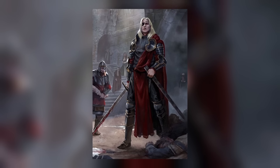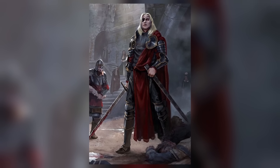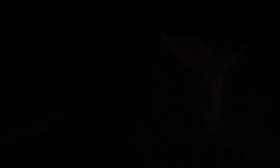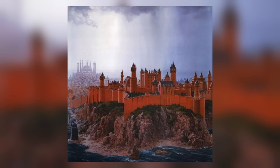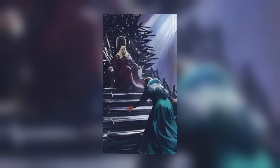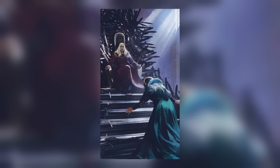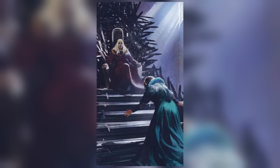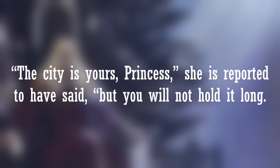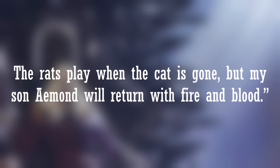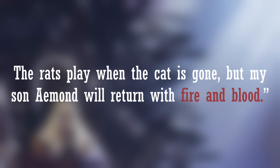However, the show will probably end in the same way that the chapter in the book does — with Aemond and Ser Criston believing that Rhaenyra and Daemon are at Harrenhal, rushing over there to force a battle, and arriving to find the castle empty and abandoned. It turns out that Daemon and Rhaenyra's forces were already near King's Landing, having surrounded the city with their army and dragons. They ultimately take the city, and Rhaenyra ascends the Iron Throne. In the book, it's said that Alicent bowed her head in defeat, surrendering the keys to the castle and ordering her knights and men-at-arms to lay down their swords. "The city is yours, princess," she is reported to have said, "but you will not hold it long. The rats play when the cat is gone, but my son Aemond will return with fire and blood."